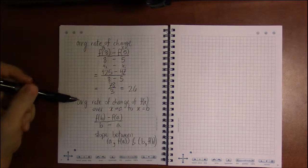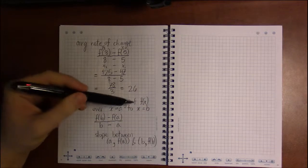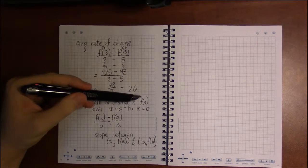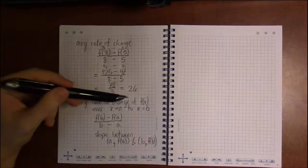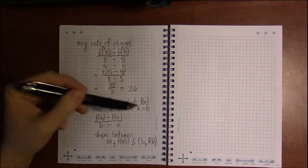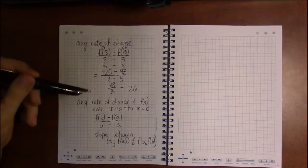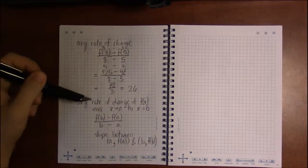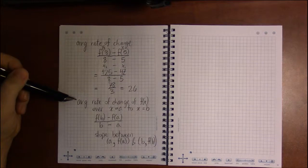So average rate of change is really just another way of saying slope, but for things that aren't necessarily lines. We can have an arbitrary function and compute the slope, if you will, of that function. But instead of calling it slope, we now call it average rate of change.